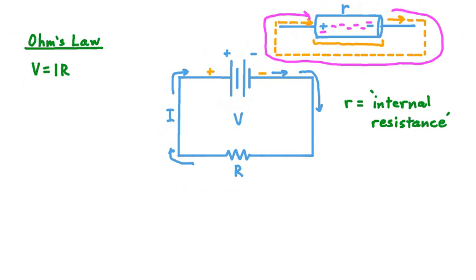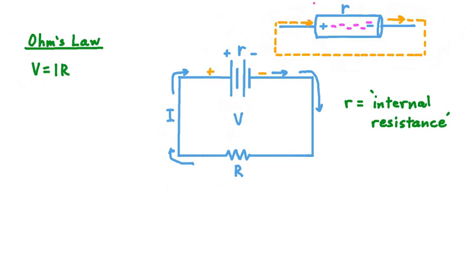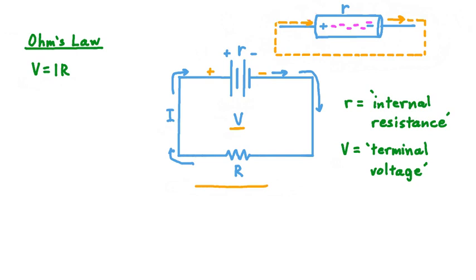We call it internal resistance because it comes from the battery or cell itself. It has an impact on several properties of an electrical circuit. If our battery has some internal resistance r, then as we apply Ohm's law, this is a resistance we need to take into account. The potential difference supplied by the battery — measured between the positive and negative terminals — is called the terminal voltage, typically symbolized using a capital V. It's the potential difference supplied to the circuit outside the battery, and it already takes into account the internal resistance r.